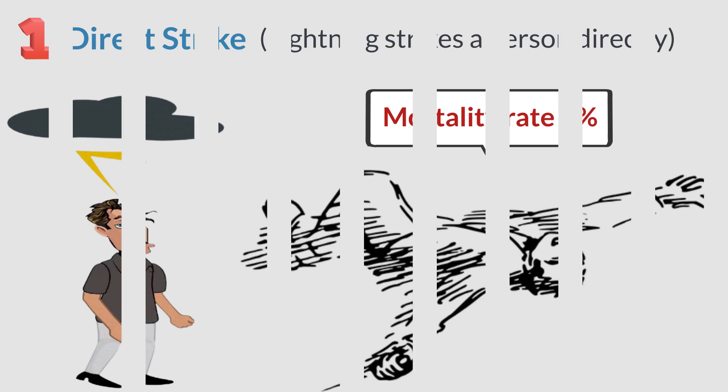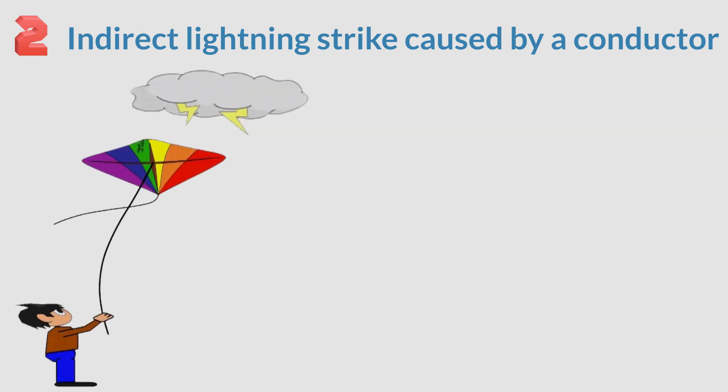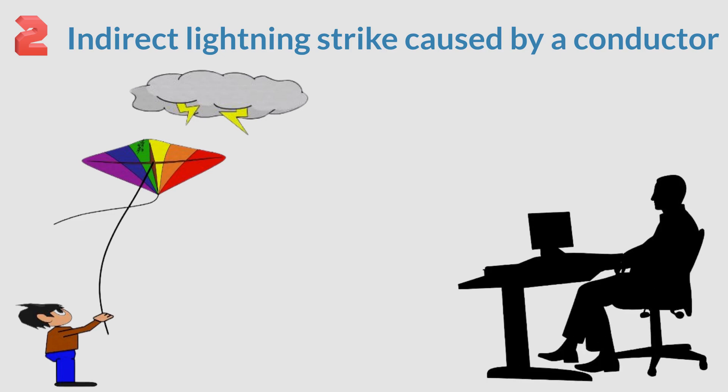The second type is an indirect lightning strike caused by a conductor. For example, you fly a kite, lightning will strike you from the kite along the string, or you use a computer in a thunderstorm, lightning can be transmitted from the power cord or network wire through the computer to your body. This case is also rare, only about 3% of the total cases.